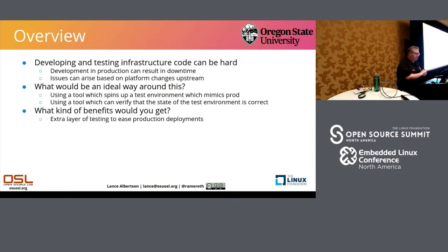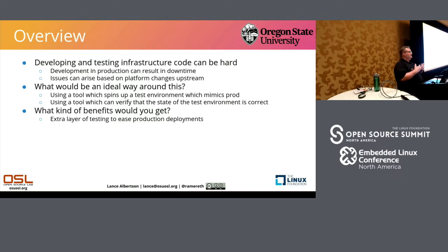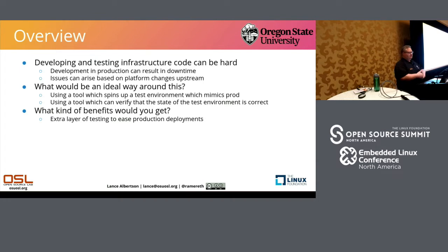I'm going to talk about how you can make your life a little bit easier when working on developing infrastructure code. Developing and testing your infrastructure code — whether it's Ansible, Puppet, Chef, you name it — can be difficult. If you do something wrong in production, you're in big trouble. Also, how do you easily deal with issues that may happen with a platform you're using? Maybe they upgraded a couple of packages and you don't know what's causing it. How are you going to replicate that and fix it?